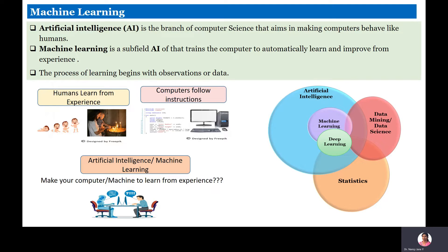In general, humans learn from experience. But traditional computers just follow instructions. If any programmer writes instructions in a program, the computer will follow them blindly. This means computers lack the ability to learn from experience.